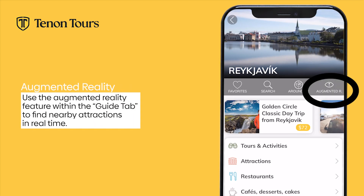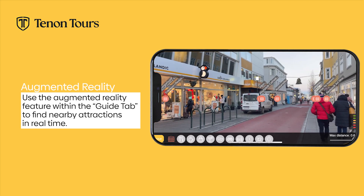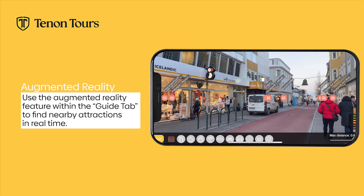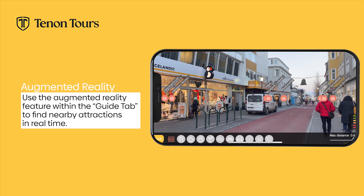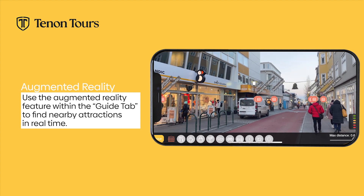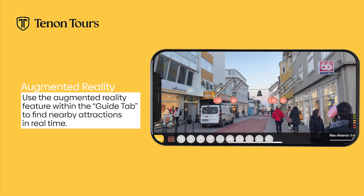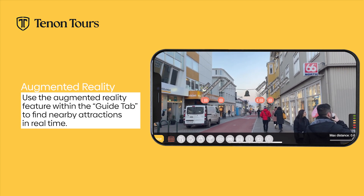Augmented Reality is our unique feature within the Guide tab that will display nearby attractions, including museums, restaurants, and shops, in real-time. Select the Augmented Reality tab on the far right of the screen. Turn your phone horizontally and see the pins appear to help guide you while exploring in destination.